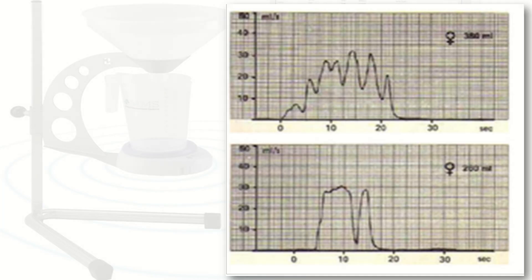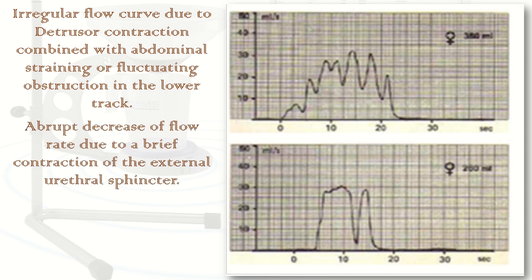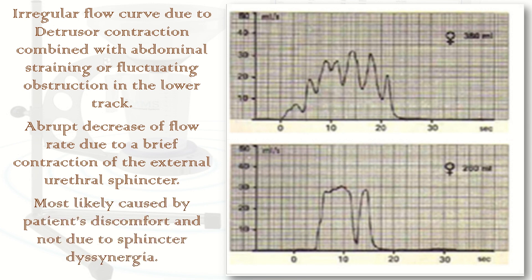In this uroflowmetry report, we have an irregular flow curve due to detrusor contraction combined with abdominal straining or fluctuating obstruction in the lower urinary tract. There is an abrupt decrease of flow rate due to a brief contraction of the external urethral sphincter, most likely caused by patient discomfort and not due to sphincter dyssynergia.